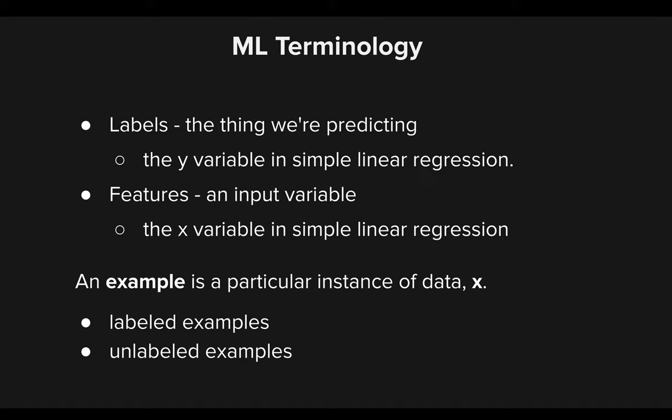An example is just a particular instance of data, x. We have labeled examples and unlabeled examples. A labeled example is one where we have both a feature and a label — a known data point in our system. For instance, a picture from the past that we know for sure is a cat — that's a labeled example. An unlabeled example is a picture we have no idea about, meaning we haven't run it through our model yet. We only have the feature, the x variable, and no idea what our output label y is.